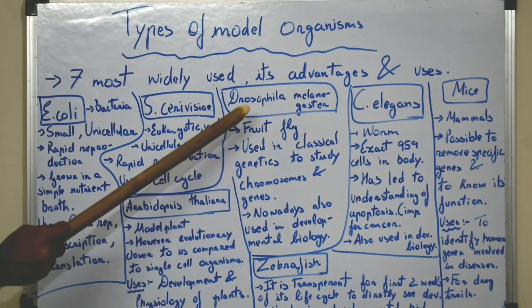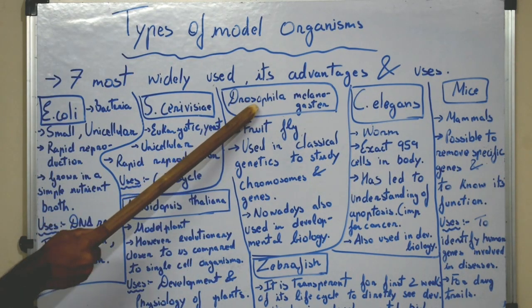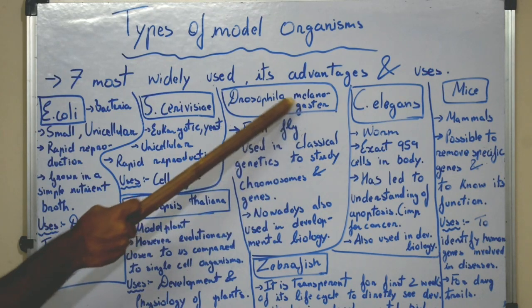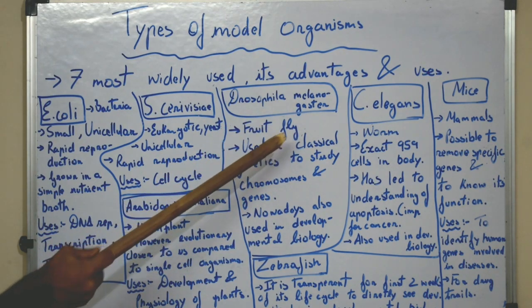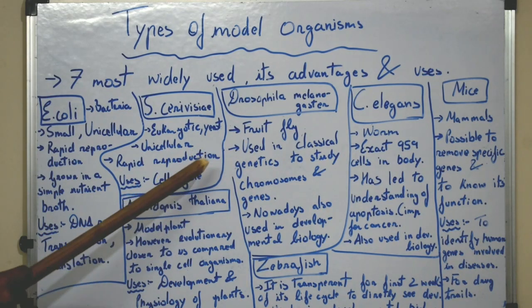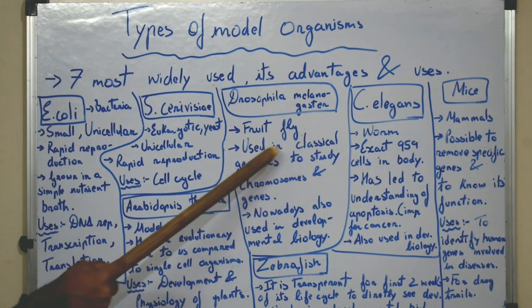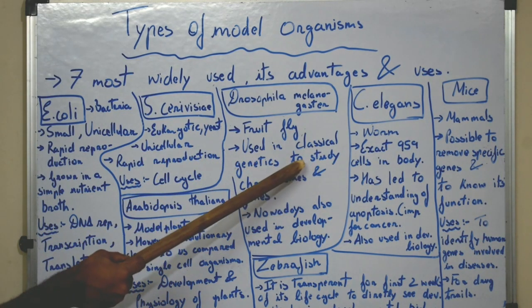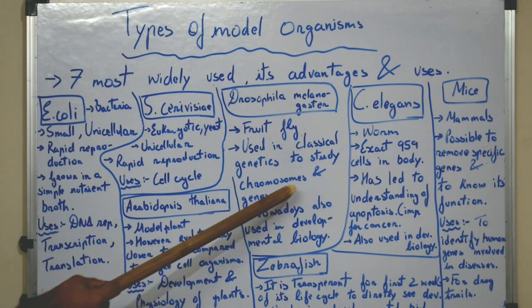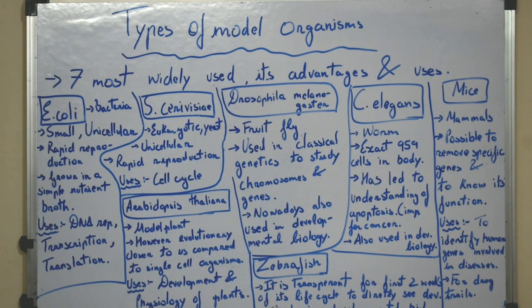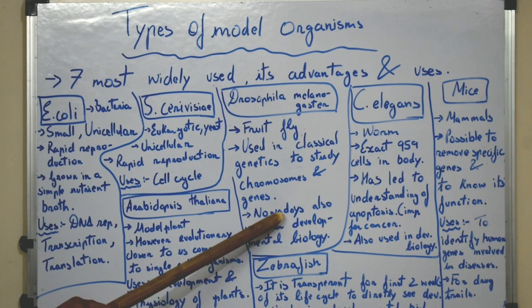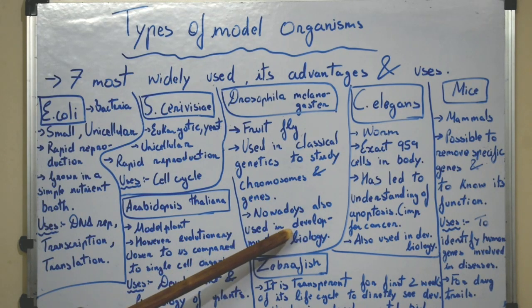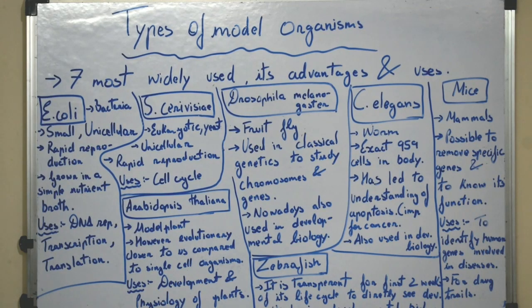Now we move on to our fourth model organism: Drosophila melanogaster. The common name for it is fruit fly. It is extensively used in classical genetics to study chromosomes and genes, and to study the structure of chromosomes. Nowadays it is also used in the study of developmental biology.